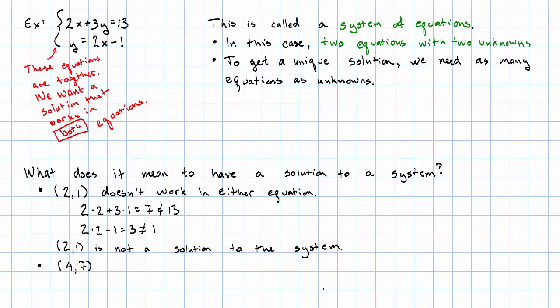What about the point 4, 7, say? Well, 2 times 4 plus 3 times 7 is 29, which is not 13.